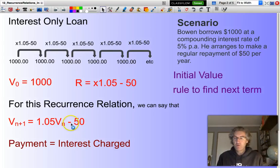Also, we are reducing our outstanding balance by $50. So our payment equals the interest that's being charged. We have an interest-only loan.